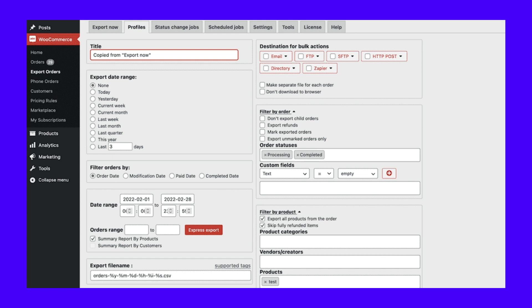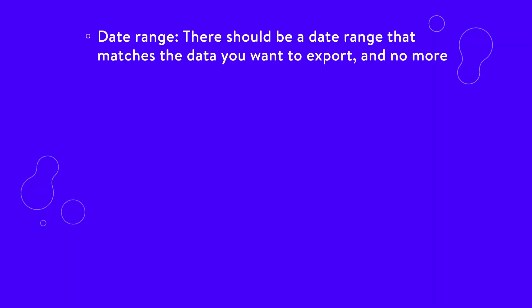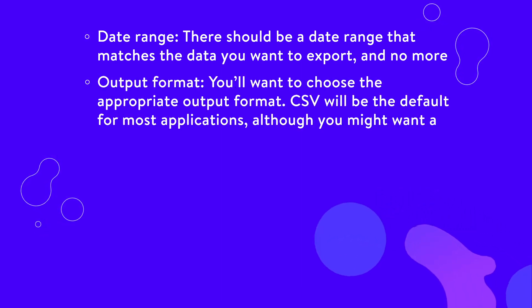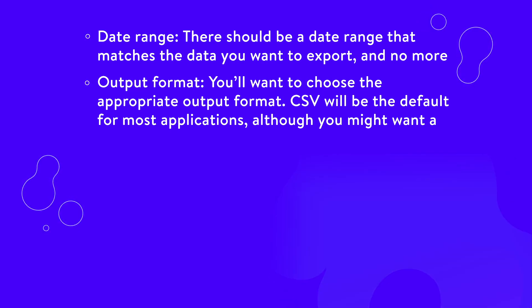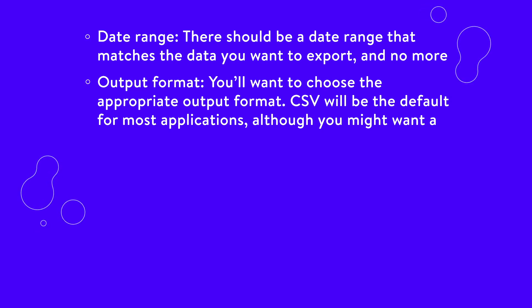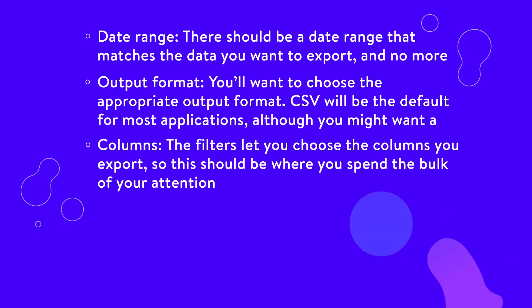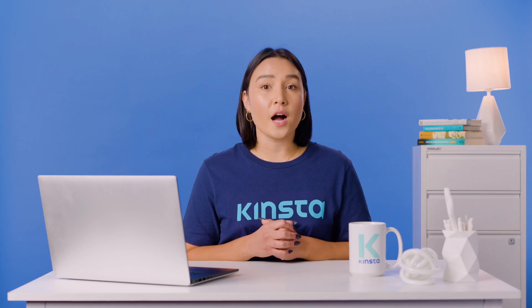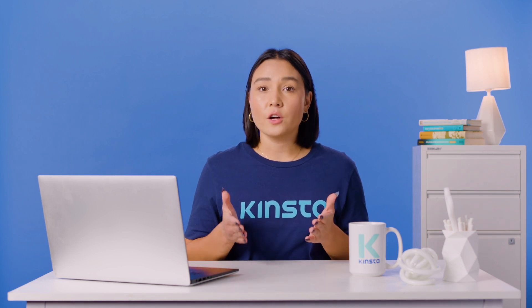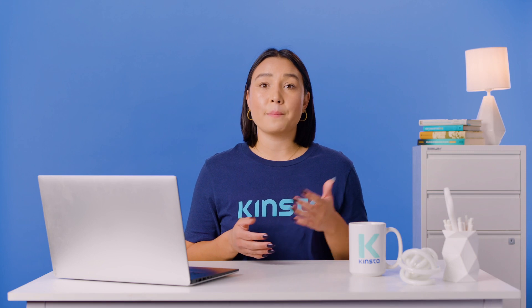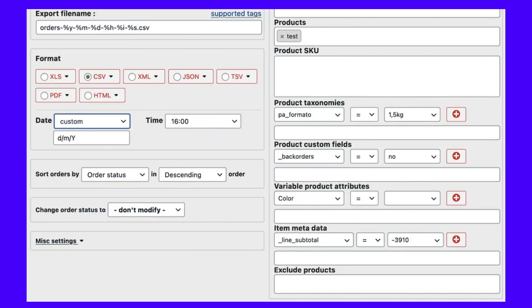From here, you'll want to alter settings based on the following. Date range: there should be a date range that matches the data you want to export and no more. Output format: you'll want to choose the appropriate output format — CSV will be the default for most applications, although you might want to export XML too. Columns: the filters let you choose the columns you export, so this should be where you spend the bulk of your attention. Advanced Order Export for WooCommerce has myriad filters for you to choose the exact range of your output data. For example, we have filters for item weight, whether the product is a backorder, variable attribute, and more. However, this doesn't restrict the number of columns you'll see in your spreadsheet.